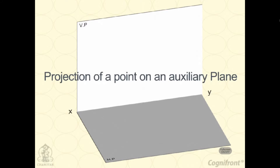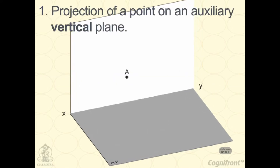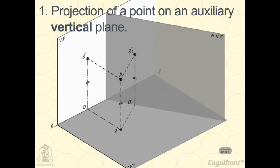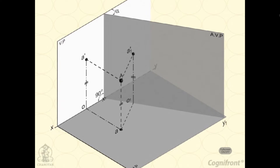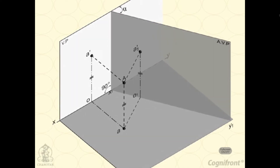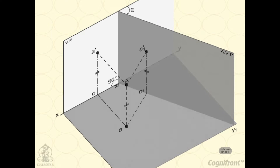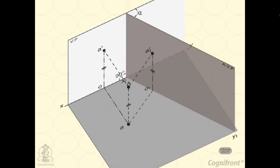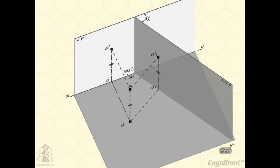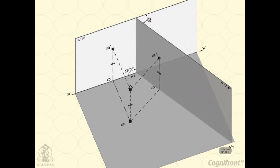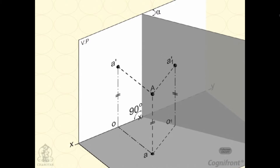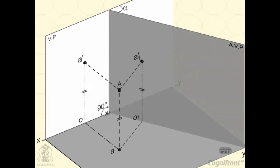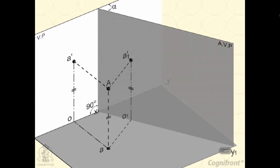Projection of a point on an auxiliary vertical plane. A point A is situated in front of the VP and above the HP. AVP is the auxiliary vertical plane inclined at an angle alpha to the VP. The HP and the AVP meet at right angles in the line X1, Y1.